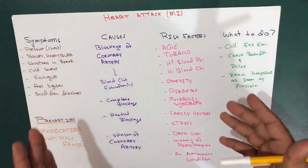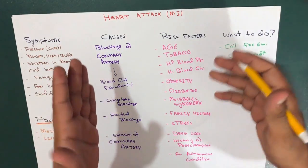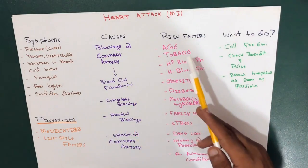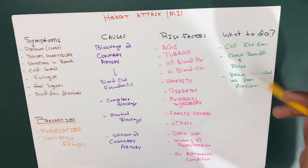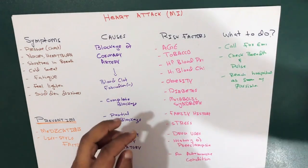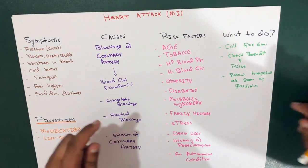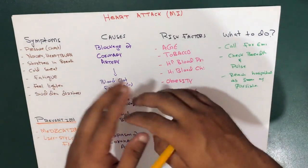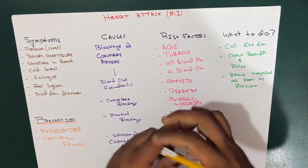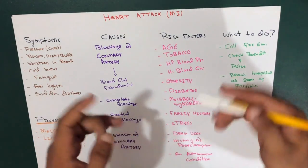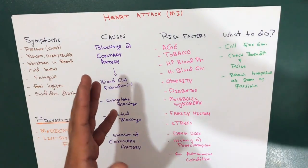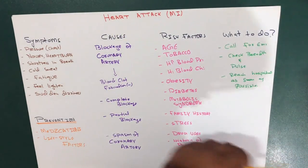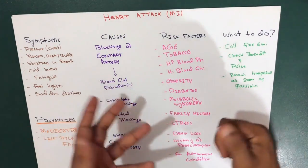We're going to cover the symptoms, causes, risk factors, what to do in an emergency, and prevention. The plaque eventually breaks away and forms a clot, which interrupts blood flow and can destroy the heart muscle by blocking the coronary arteries. A heart attack can be fatal, but treatment has improved greatly.